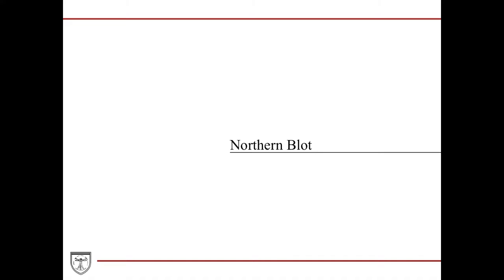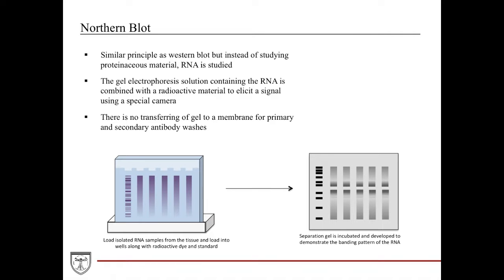The next one we're going to talk about is the Northern blot. The Northern blot is honestly very similar to the concept of the Western blot. You take your sample of interest, you place it into a gel, you have a standard, you run electrical current through it, gel electrophoresis, and then you will stratify or differentiate the sample based on the RNA according to its molecular weight or size. It's exactly the same thing. The difference is it doesn't take as long. There's no transferring of the gel to a nitrocellulose membrane. You can go ahead and develop it right away.